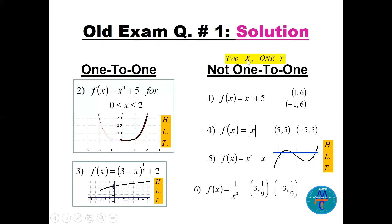Not one-to-one: number one, four, five, and six. The reason is if you get two different values for x — like one and minus one — and replace them you get the same y, so two x-values share the same image. Absolute value is not one-to-one. x cubed minus x: graph it and use the horizontal line test — not one-to-one. The function one over x squared: choose x = 3 and x = −3, you get the same y, so not one-to-one.